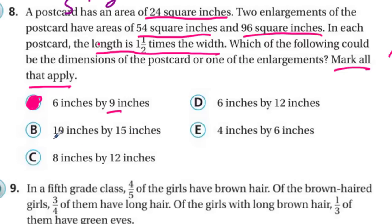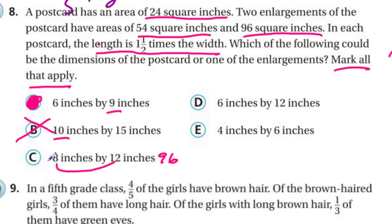Ten by 15 gives 150 square inches — not one of our areas, so no. Eight inches by 12 inches: eight times 12 is 96, and we do have an enlargement of 96 square inches. Is 12 one and a half times 8? Half of eight is four, and eight plus four is 12 — yes, that is true. So far we have two. Six inches by 12 inches: 12 times six is 72 — we don't have one for 72, so that's out. Four inches by six inches: four times six is 24 — 24 square inches. So three answers for that one.